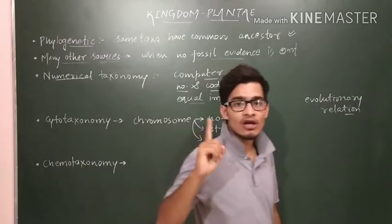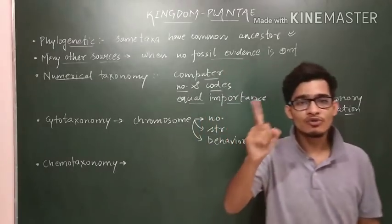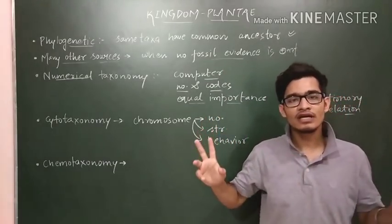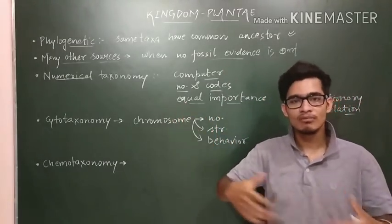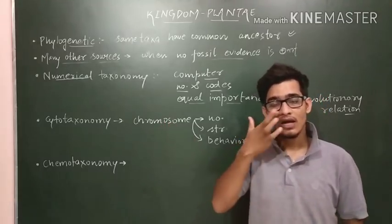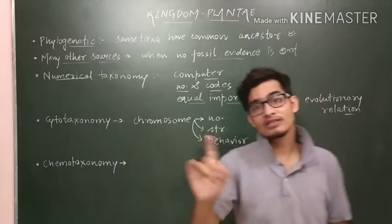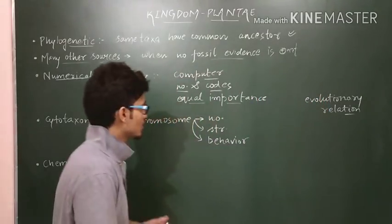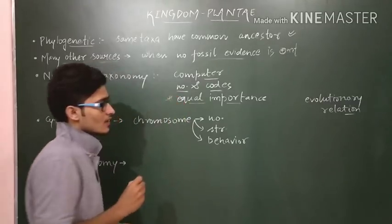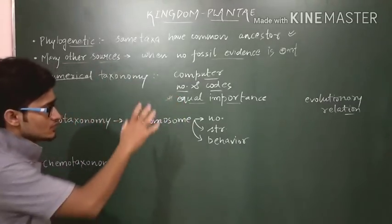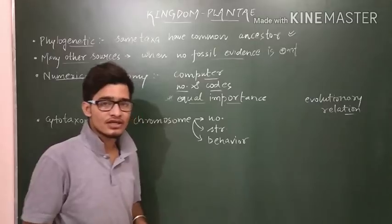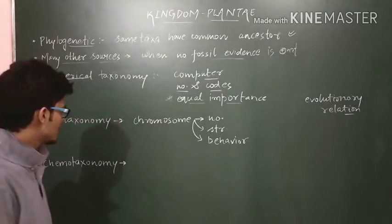Numerical taxonomy is very important because it records data in the computer, and many characters can be taken since it is simply based on numbers. Any number of characters can be included and all characters are given equal importance. Hundreds and thousands of characters can be taken at a particular time.